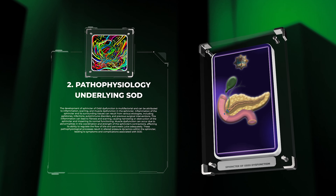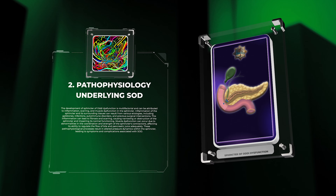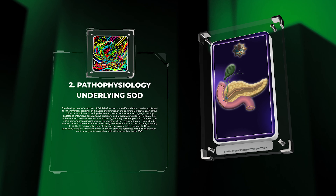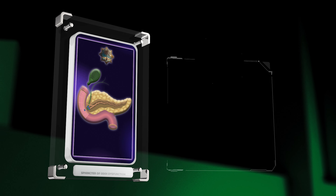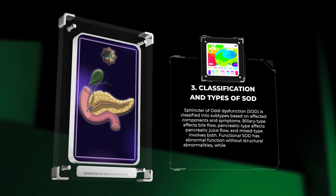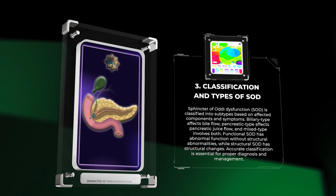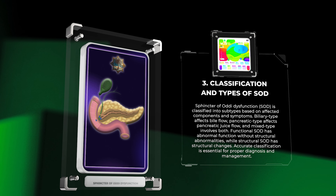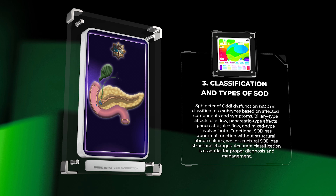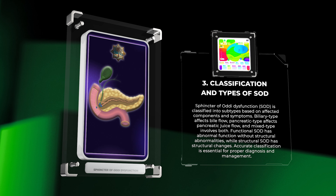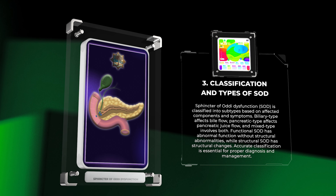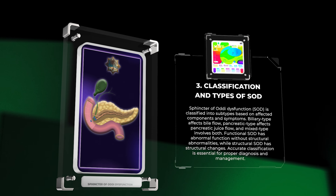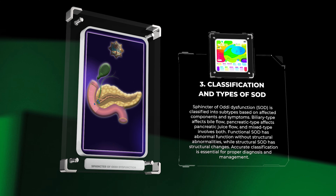These pathophysiological processes result in altered pressure dynamics within the sphincter, leading to symptoms and complications associated with SOD. SOD is classified into subtypes based on affected components and symptoms: biliary type affects bile flow, pancreatic type affects pancreatic juice flow, and mixed type involves both. Functional SOD has abnormal function without structural abnormalities, while structural SOD has structural changes. Accurate classification is essential for proper diagnosis and management.